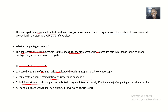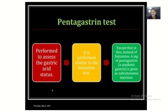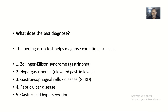After pentagastrin is administered, every 15 to 60 minutes additional stomach acid samples are collected to check the rate at which the stomach is producing acid in response to pentagastrin. These samples are then analyzed for acid output, pH levels, and gastrin levels.